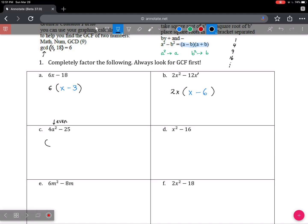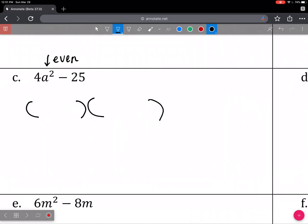So difference of squares factoring, we open up two brackets and we think square roots. What's the square root of 4? 2, 2. The other term involved is a squared, so we're going to have to think of the square root of a squared, which is a, a.